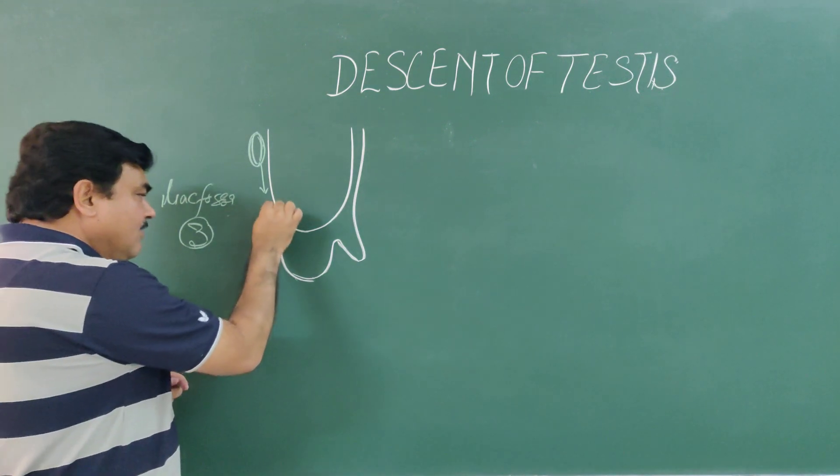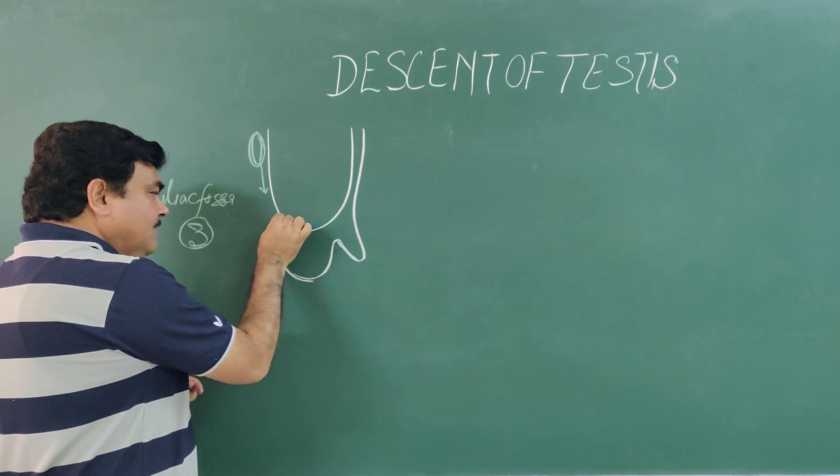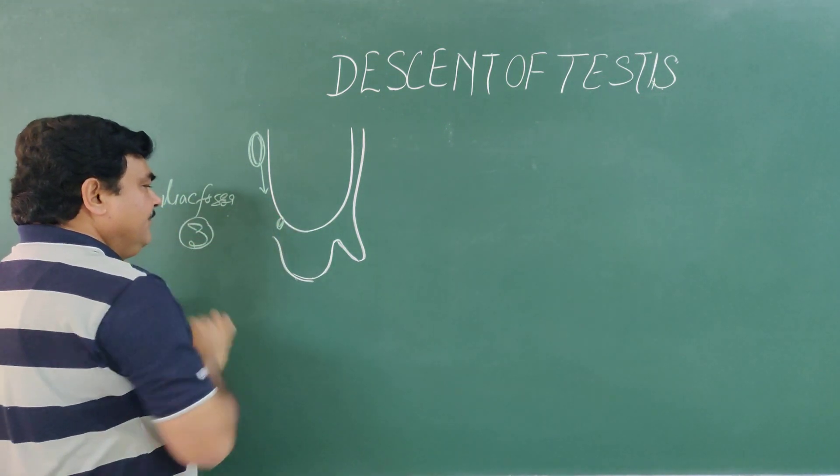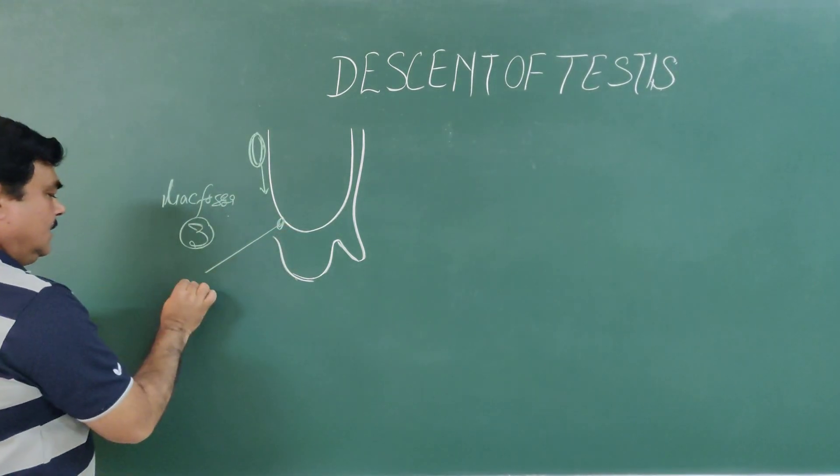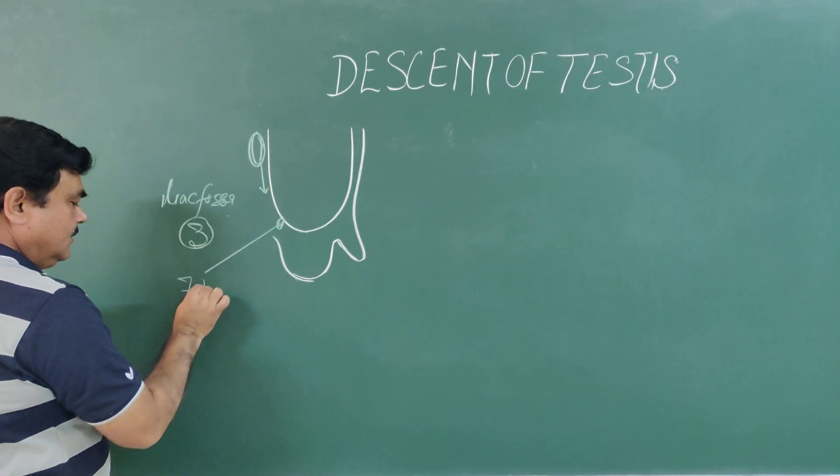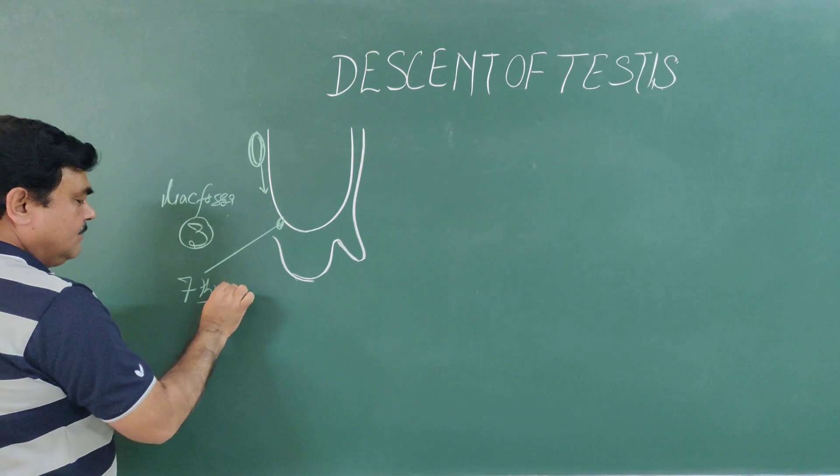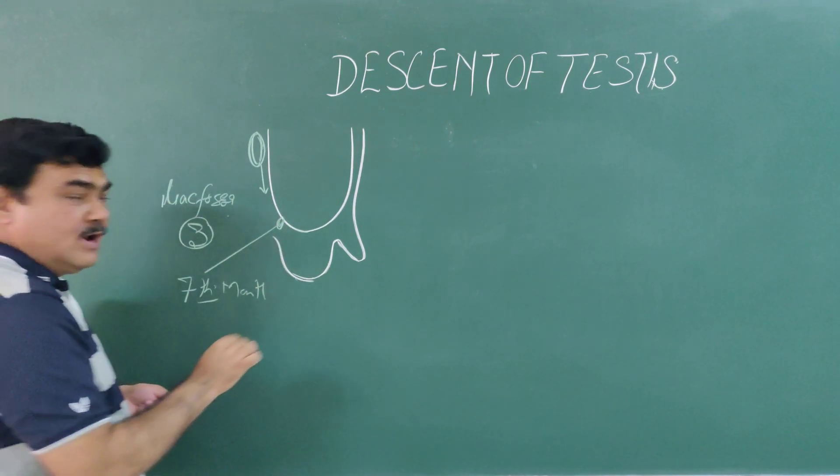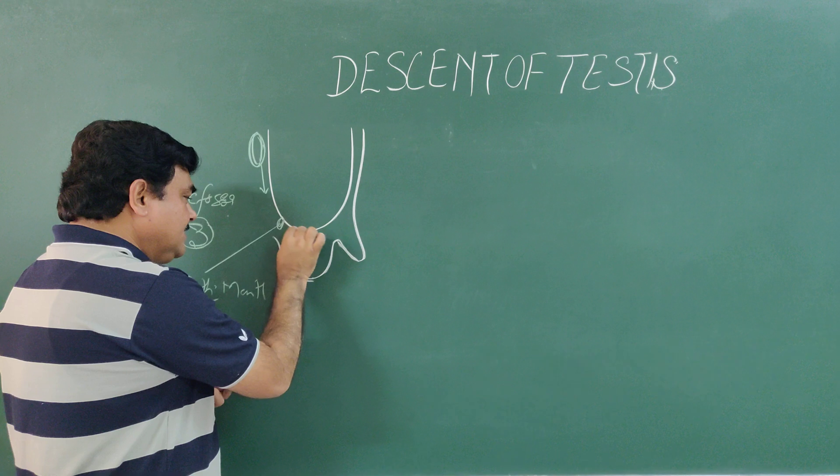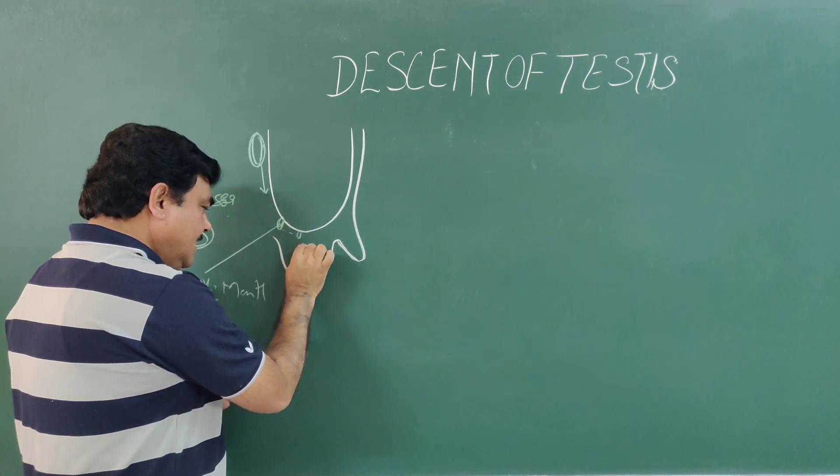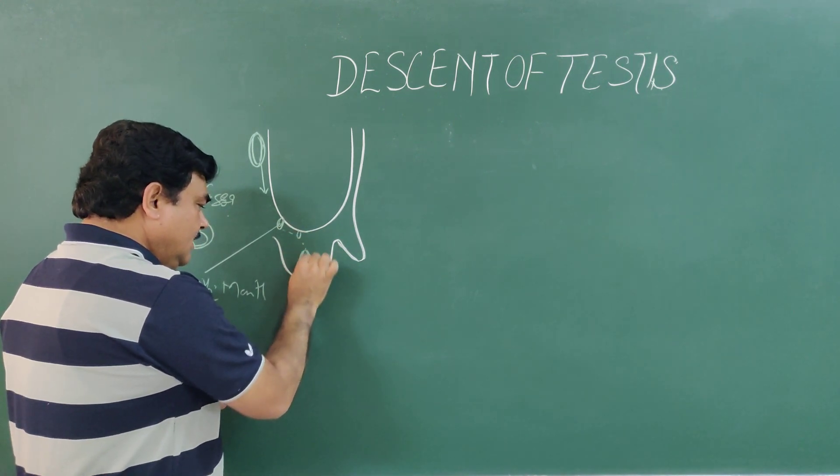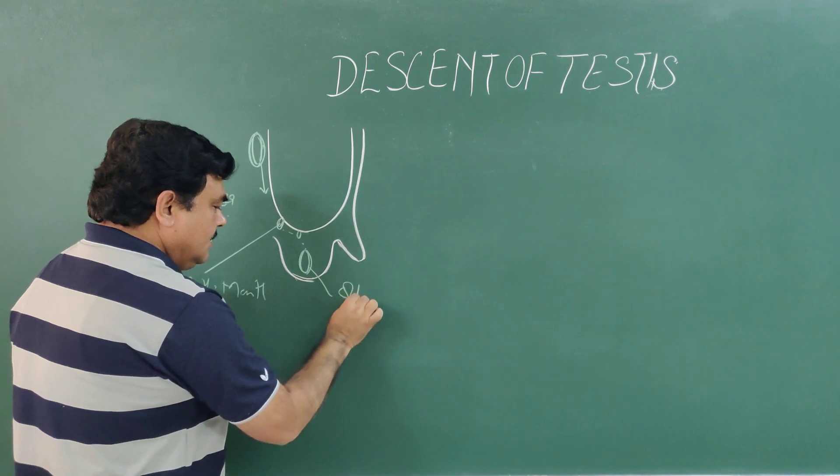And from here, iliac fossa, it passes through the deep inguinal canal at the seventh month. It passes through deep inguinal canal and through superficial inguinal canal, descending into the scrotum during the end of the eighth month.